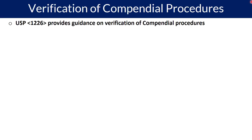Before we talk about the parameters and types of test procedures, let us first understand the primary source of guidance for verification of compendial procedures. Compendial procedures means the procedures available in a pharmacopoeia monograph — such as USP, EP, BP, or Japanese Pharmacopoeia. It may be a procedure for assay or dissolution for your product.